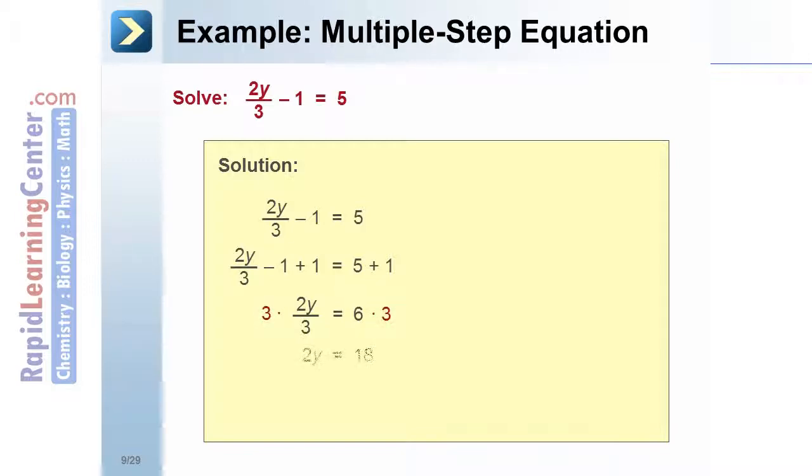Next, multiply both sides by 3: 2y = 18. Lastly, divide both sides by 2: y = 9. Check the solution by substituting 9 back into the original equation. Both sides equal 5, so the solution is verified.